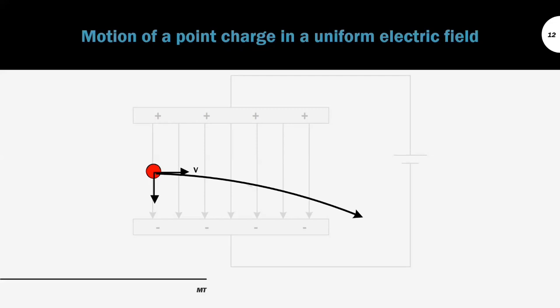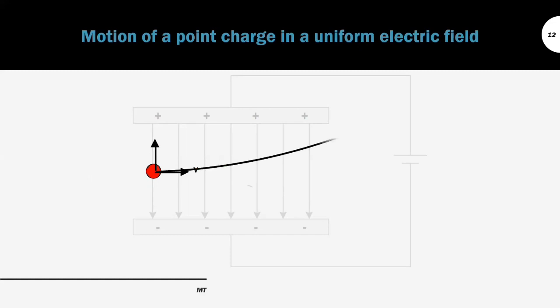Bear in mind that what we have discussed up to this point is about the positive charge. What about the negative charge? If we are talking about a negative charge, everything will go in the opposite direction. For example, the electric field strength will be outward, and the point charge will move upward instead of downward since it is a negative charge.